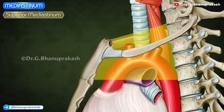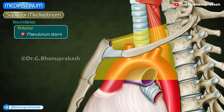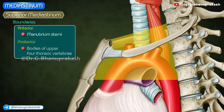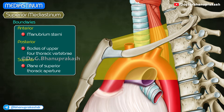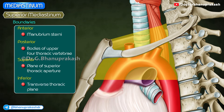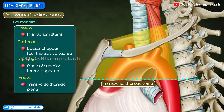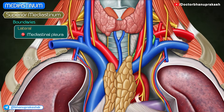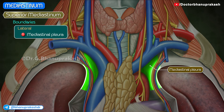Superior mediastinum — boundaries: Anteriorly it is bounded by the manubrium sterni, posteriorly by the bodies of the upper four thoracic vertebrae, superiorly by the plane of the superior thoracic aperture, inferiorly by an imaginary plane passing through the sternal angle in front and the lower border of the body of the fourth thoracic vertebra behind, and on each side by the mediastinal pleura.